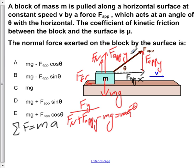fn and f applied y are both positive because they're in the positive y direction, they're both pointing upward, and mg is pointing down the negative direction.